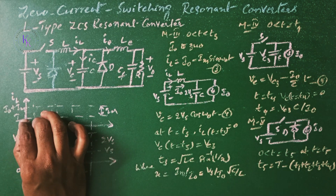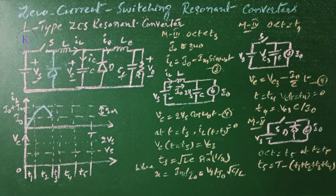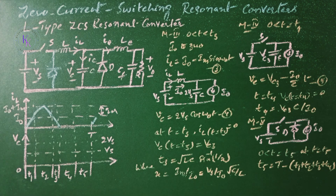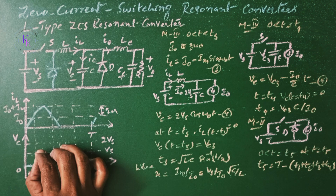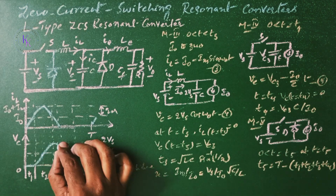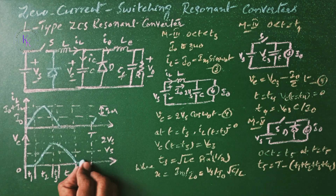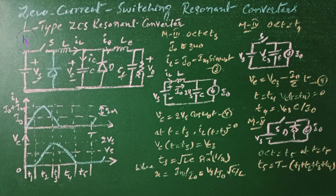Looking at the waveforms: in mode 1 the inductor current rises from 0 to I0; in mode 2 it reaches the maximum value of Im + I0 and decreases back to I0; in mode 3 it falls to 0 and restarts after T. The capacitor voltage is 0 in mode 1, builds up in mode 2 reaching Vs when IL is maximum, then reaches 2Vs at the end of mode 2, decreases in mode 3, reaches 0 at the end of mode 4, and stays at 0 in mode 5. These are the waveforms for the L type zero current switching resonant converter.